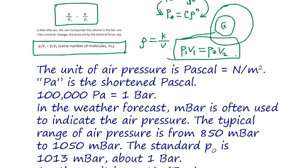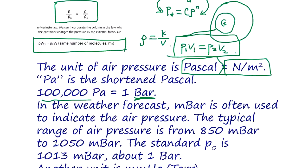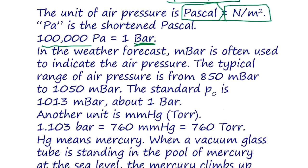When we talk about pressure, it is measured in newtons per square meter, called the pascal. In weather forecasting we use bar: one bar equals 100,000 pascals. Since bar is a bit large, we use millibar.